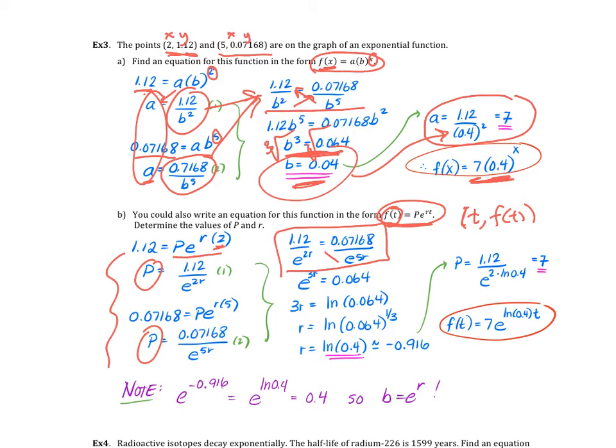You might want to pause and do this on your own. We cross multiply, then divide. e to the 3r equals 0.064. So we take the ln of both sides, that 3r goes in front. We get 3r equals ln of 0.064. Divide each side by 3, which is the same as multiplying by one third, and you put it in front, which means we can raise that to the one third power. What is 0.064 to the one third power? It's 0.4. So r equals ln of 0.4. If we plug that in, we would still get a value of 7. It's your initial amount, the same as your letter a up here.